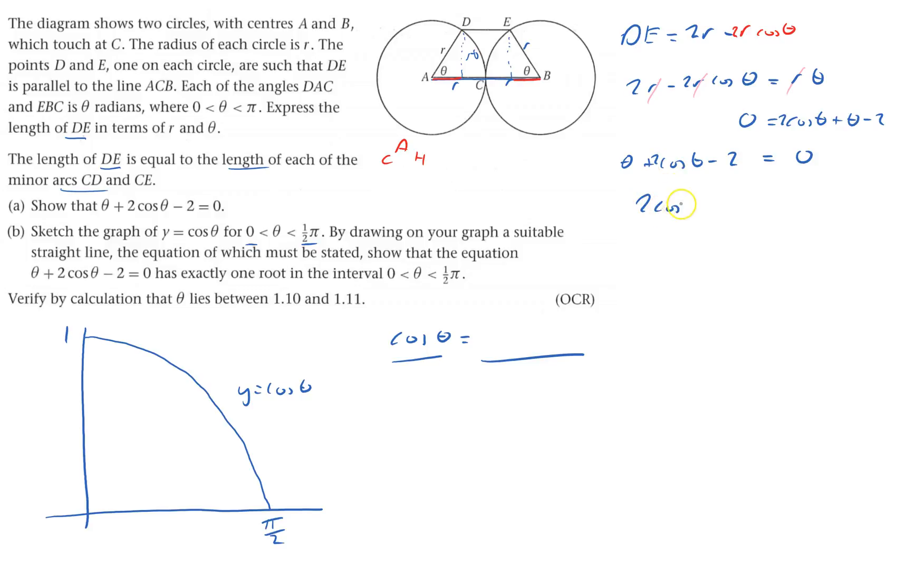I've got 2 cos theta equals negative theta plus 2. Now I get cos theta equals minus theta over 2 plus 1. I've got cos theta on the left, so all I have to do is draw the line minus theta over 2 plus 1. That's the line: y equals minus theta over 2 plus 1.